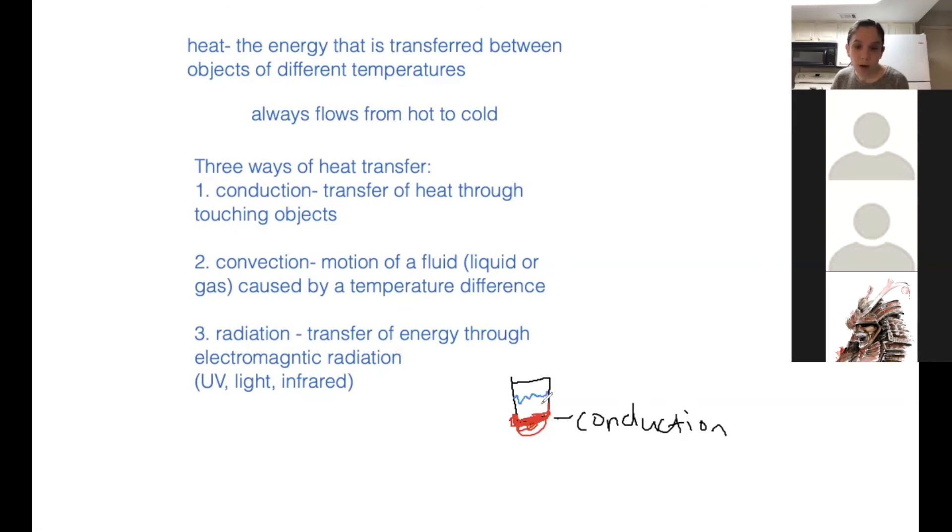When you have a fluid, whether it's water or air, and one part's hotter than the other part, the part that's hot is going to be less dense. So this bottom part is a lot hotter than the top part of the water, and it's going to rise. The hot water down here, which is less dense, will rise to the top, and the cold water, being more dense, will sink to the bottom. You have this swirling movement going on where the hot water rises, the cold water sinks. That's convection.